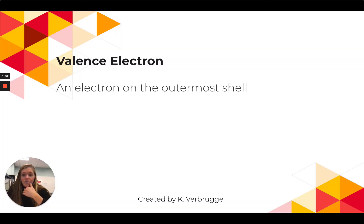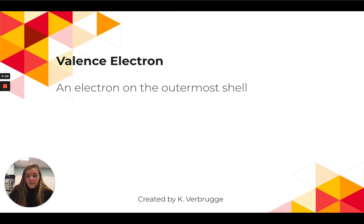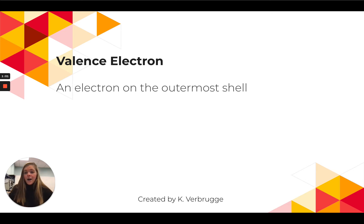Some more review: a valence electron is an electron on the outermost shell. Remember that these valence electrons are the electrons that are participating in the bonding. So depending on how many valence electrons there are helps determine what type of bond may occur.